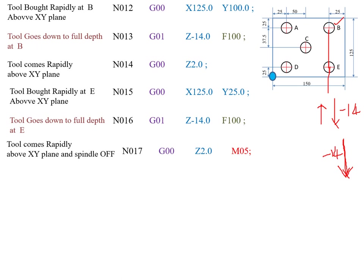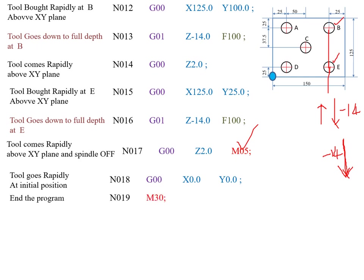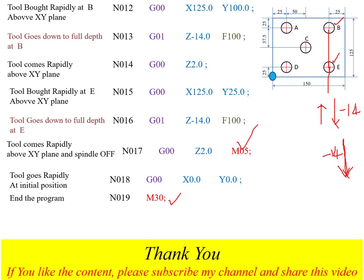We have now completed all 5 drilling holes. Then we turn off the spindle using code M05. Next, the tool returns to its initial position at X0, Y0. Finally, the last block is the end of the program, using code M30. Thank you.